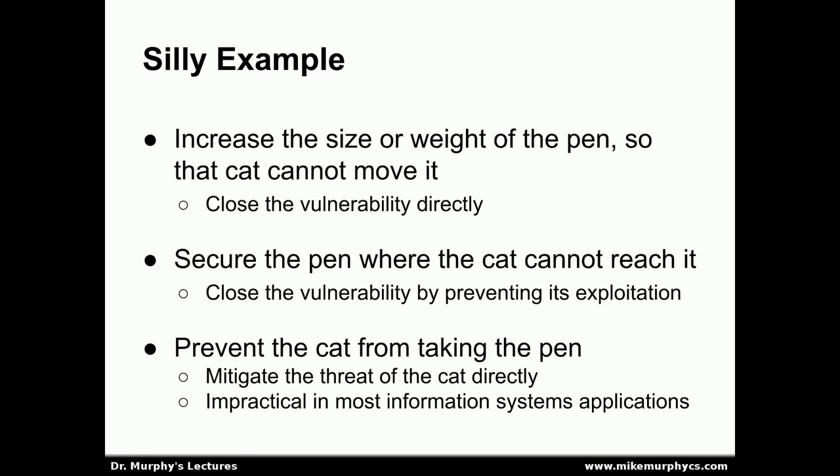In our silly example, there are a couple of ways to make the pen less vulnerable to the cat. One way is to increase the size or weight of the pen so the cat couldn't move it — making it four feet long and weighing 20 pounds. That would directly close the vulnerability, though it would have side effects: it would be fairly difficult to write with a 20-pound, four-foot-long pen. We could also secure the pen somewhere the cat couldn't reach it, closing the vulnerability by preventing its exploitation. Another solution would be to move the pen away from the cat entirely.